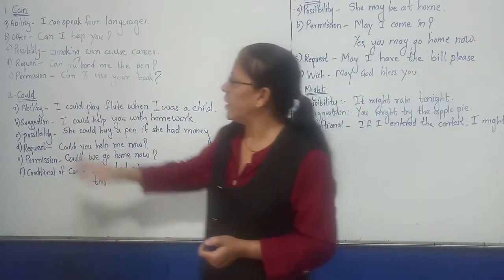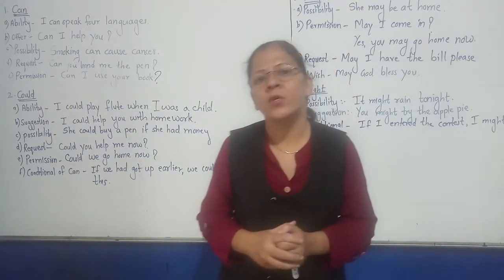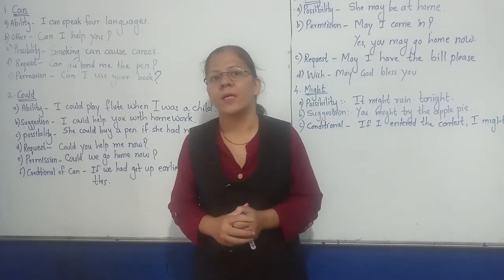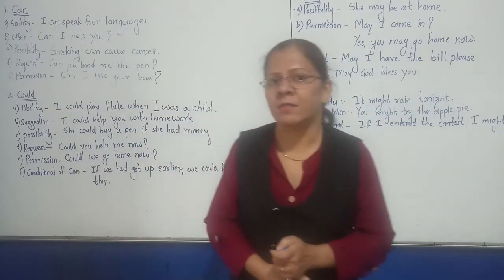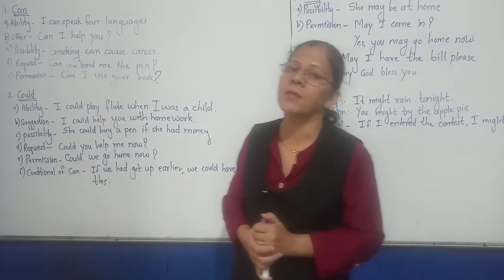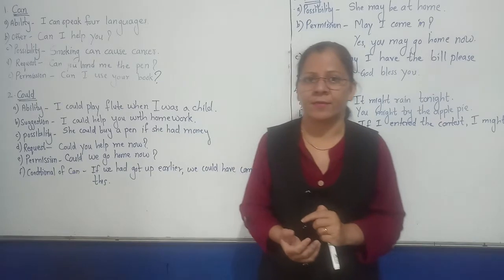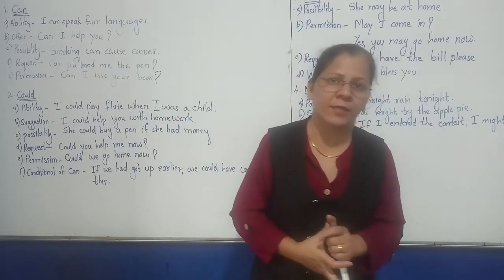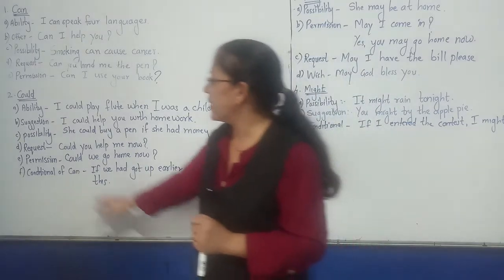The next modal is 'could'. Can is generally used in the present, while could indicates the past. To show ability in the past, we use could. For example, 'I could play the flute when I was a child' — meaning in the past I had the ability to play the flute.